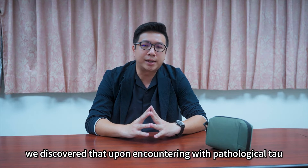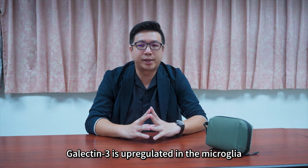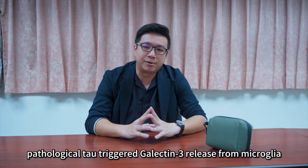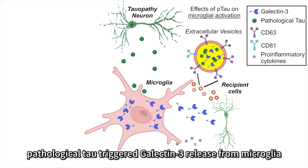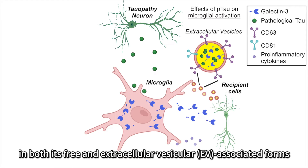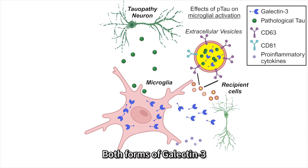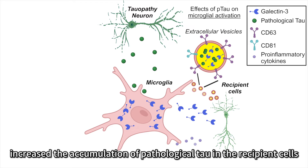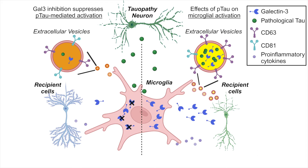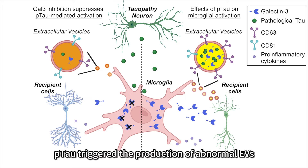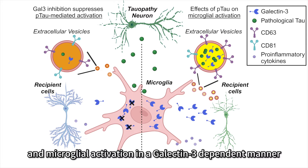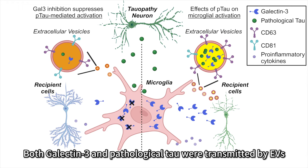Here, we discover that upon encountering pathological tau, galectin-3 is upregulated in the microglia. Interestingly, pathological tau triggers galectin-3 release from microglia in both its free and extracellular vesicular EV-associated form. Both forms of galectin-3 increase the accumulation of pathological tau in the recipient cells. Furthermore, p-tau also triggered the production of abnormal EVs and microglia activation in a galectin-3 dependent manner, and both galectin-3 and pathological tau were transmitted by EVs.